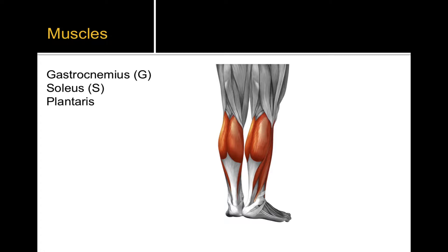I'm not actually going to label the plantaris because in humans it doesn't play a very big role at all. In animals it plays a larger role in the contraction of the calf muscles. But in humans, gastrocnemius and soleus play the primary roles in contraction or plantar flexion for the calf.